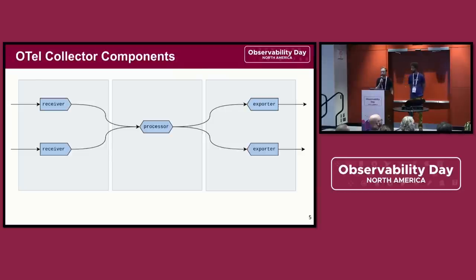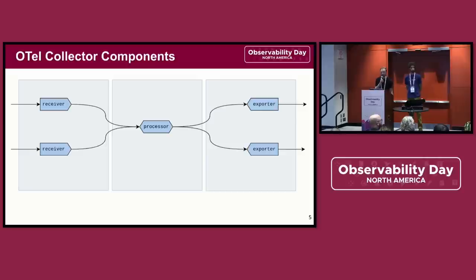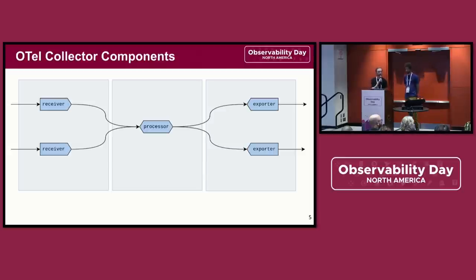The flow of data through the Collector is organized into pipelines, which are composed of individual components that each handle a particular task. The Collector has five classes of components, but the three that we're going to focus on today are receivers, processors, and exporters. This diagram shows an example pipeline where data comes into the Collector at one of the points on the left and proceeds through the pipeline until it's emitted on the right. Starting on the left with receivers, receivers take data from an external source and translate it into pData, the collector's internal format based on the OpenTelemetry protocol, or OTLP.